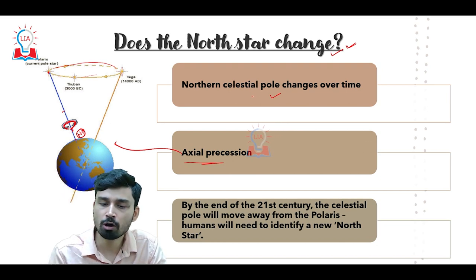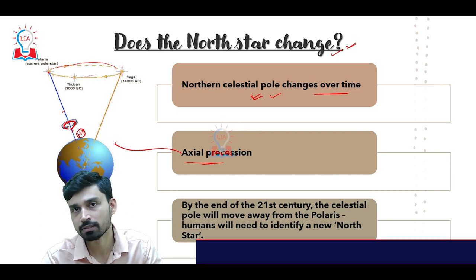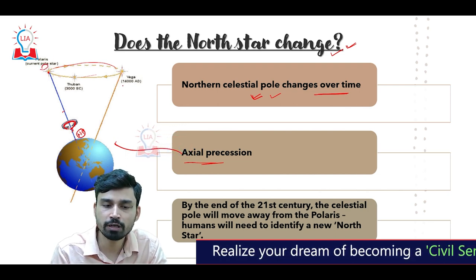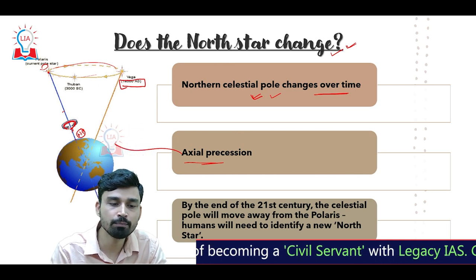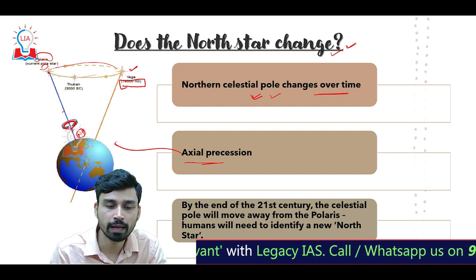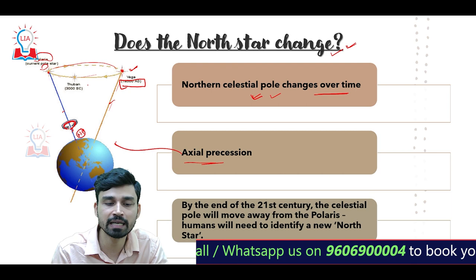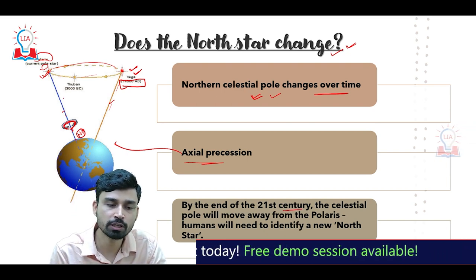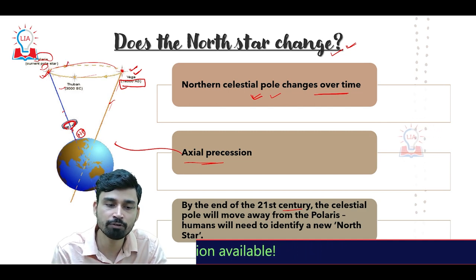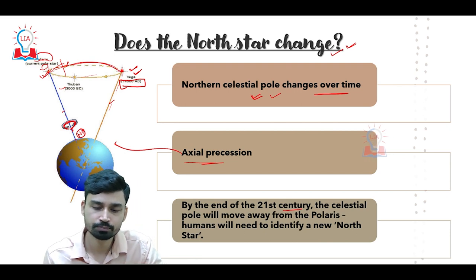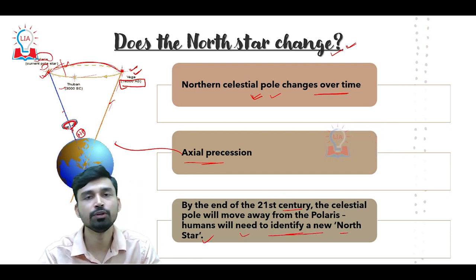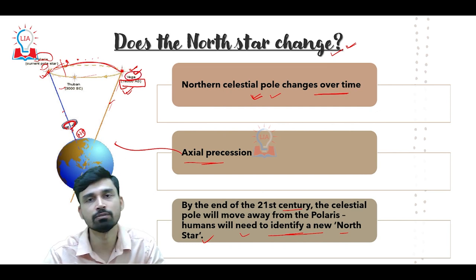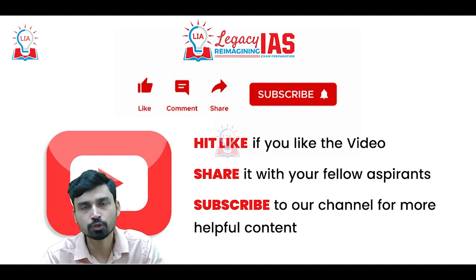Because of axial precession, the northern celestial pole will change over time. Currently Polaris is in direct line with the north pole, but around 14,000 AD another star, Vega, will become the pole star as the earth's axis shifts. Even by the end of the 21st century, the celestial pole will have moved away from Polaris. Humans will eventually need to identify a new northern star, and in 14,000 AD it will be Vega where the earth's rotation axis will point.